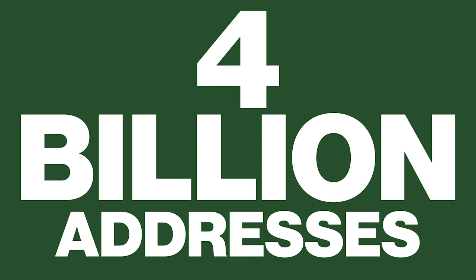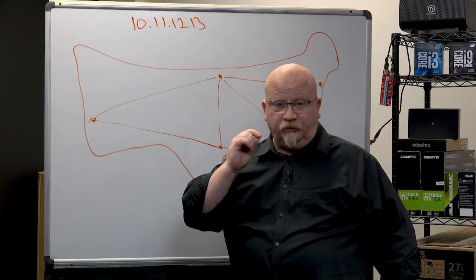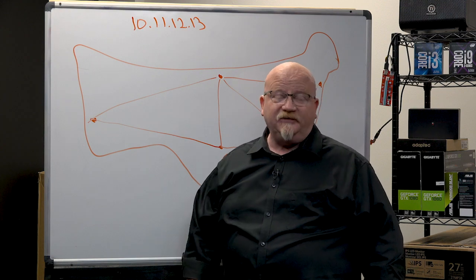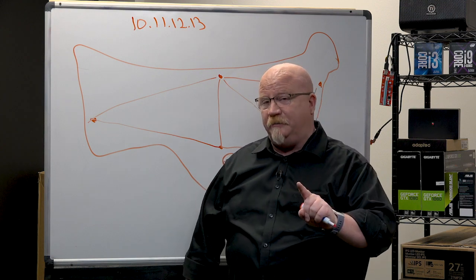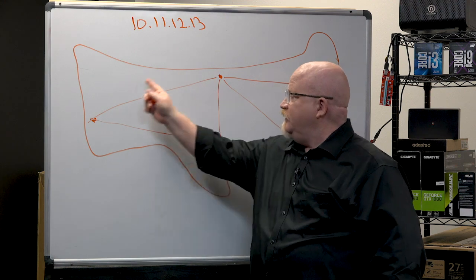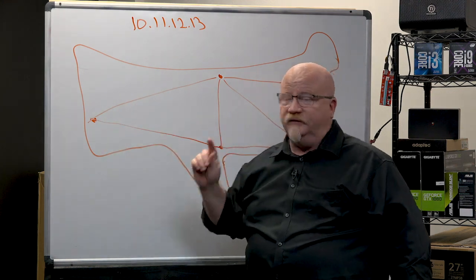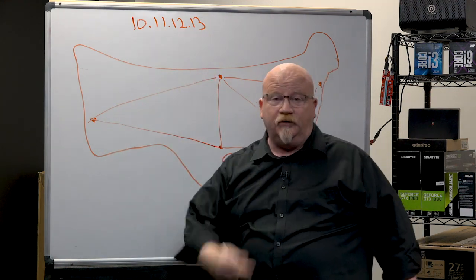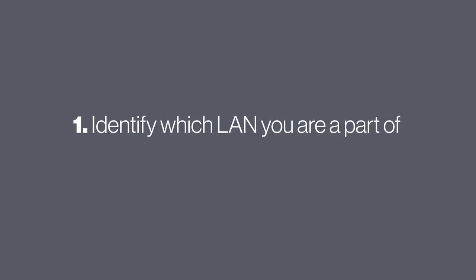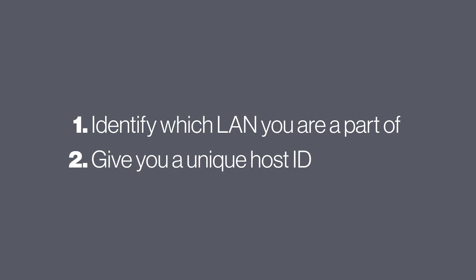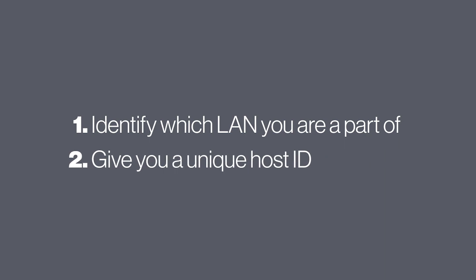Keep in mind every computer on the internet must have its own IP address. But not just its own IP address — we're going to have all these LANs all over the place. So this number does two things at the same time: number one, it identifies which local area network you're a member of; and number two, it gives you a unique host ID that's unique only to you.